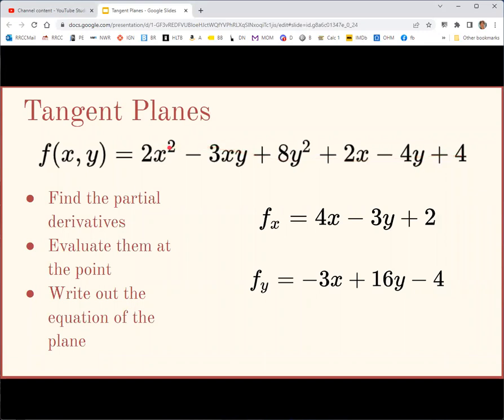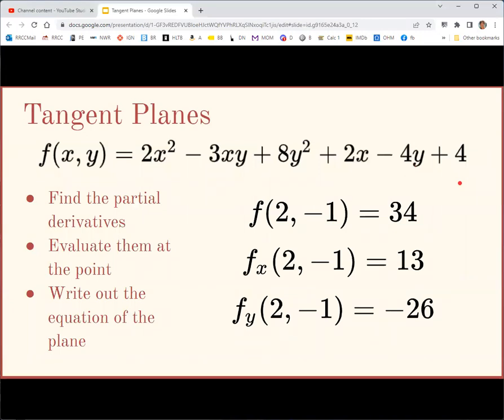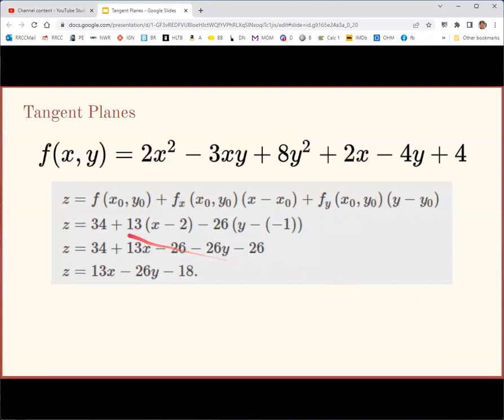For y derivatives, this is 0, negative 3x, 16y, 0, negative 4, and 0. So we get our partial derivatives, and then we need to evaluate these functions at the point we're interested in. Say we want to find the tangent plane when x equals 2 and y equals negative 1. Here's the z naught value, and you get that just by putting the coordinates into the original function, and then you can use your partial derivative functions and evaluate them at the same point, and you get these three constants.